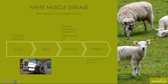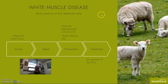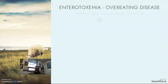White muscle disease is another condition we've talked about previously. Due to the amount of time that sheep and goats spend on pasture, they are susceptible to it, especially when we have low selenium soils. The treatments and prevention are basically the same as we discussed in other species.